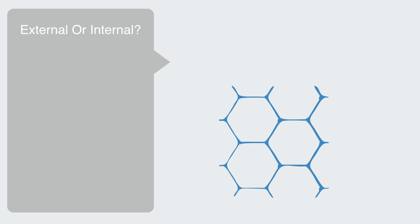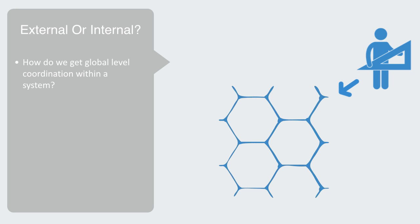The real question is why or how do we get things to work together? How do we get global level coordination within a system? And there are two fundamentally different approaches to trying to answer this question. Firstly, this coordination may be imposed by some external entity. Or secondly, it may be self-generated internally.